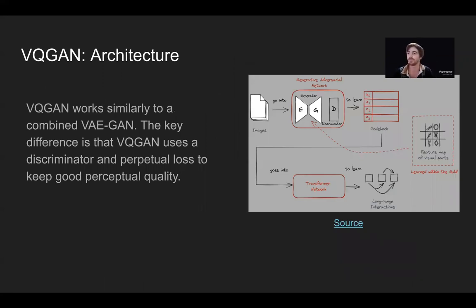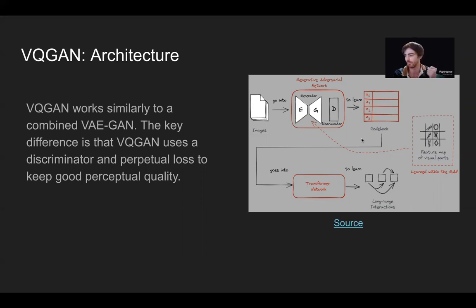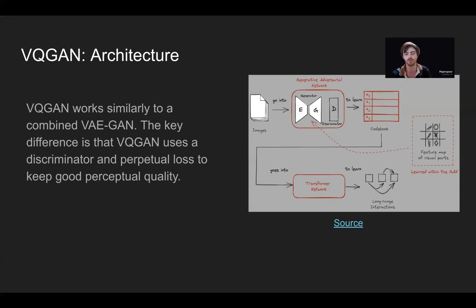As mentioned, it works pretty similar to a VAE GAN. The key difference is that the VQGAN uses a discriminator and perceptual loss to keep good perceptual quality. This is done in a two-stage manner. First, the VQGAN is trained to learn the image's visual parts and codeword representation in the form of quantized codebook indices of their embeddings. An encoding of an image can be represented as a sequence from this codebook. Then an auto-regressive transformer is trained using the sequential input from the codebook with sliding attention to learn long-range interactions across visual parts. Basically, it's trained to predict the next index in the sequence, and that allows it to learn much finer details in the connections between the coarse and fine details.